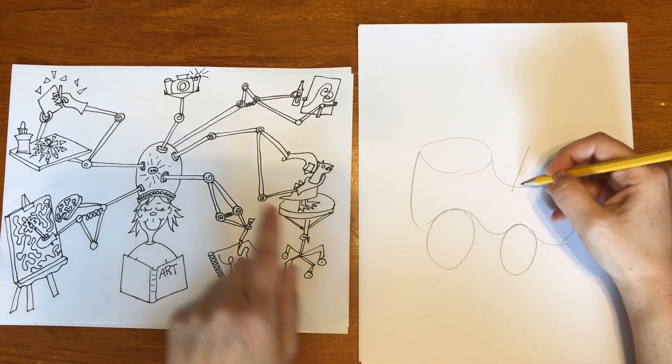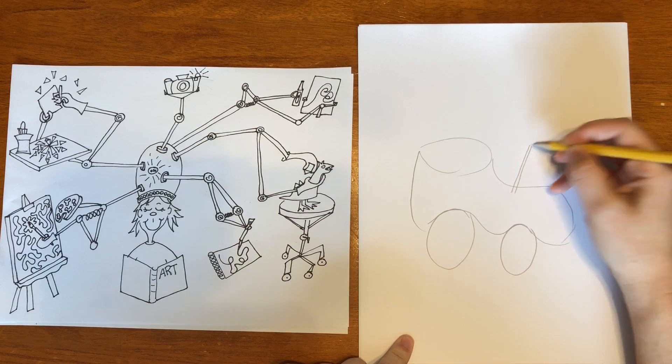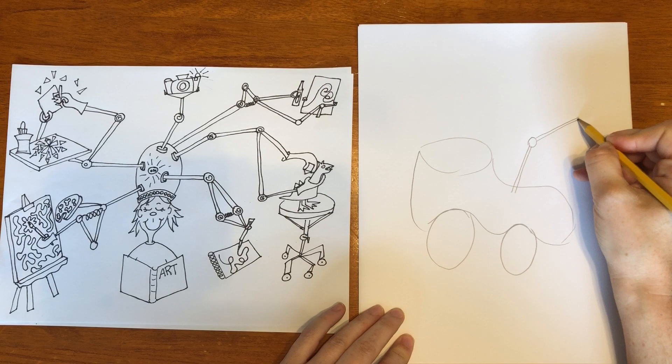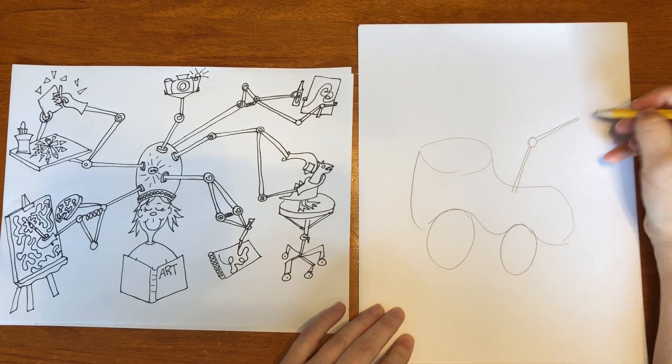So to make these arms it's two lines that are next to each other. I did a circle and then another arm that comes out and maybe this one's going to hold a spray bottle.